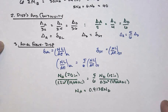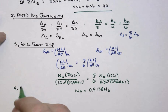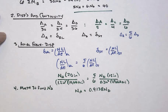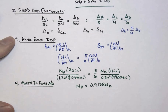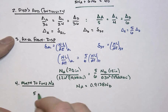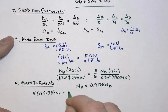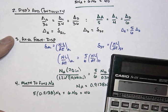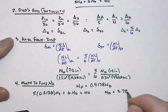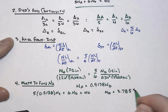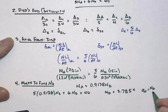We substitute that back into the equilibrium equation. So 5 times (0.9138 ND) plus 6 ND equals 40. Solving for the axial force in the steel, we get ND equals 3.785 kips. Let's quickly check the stress in the steel to make sure we haven't violated linear elastic action.